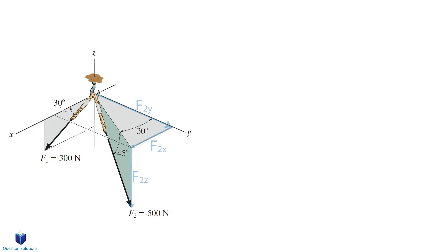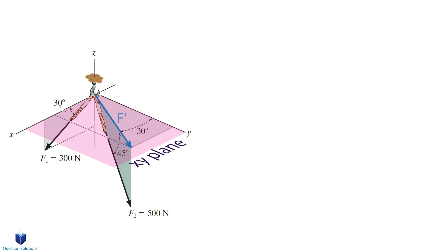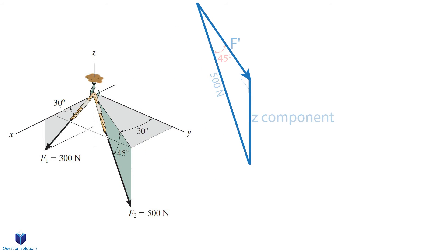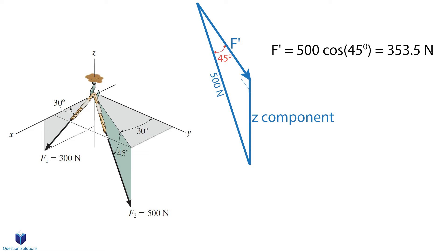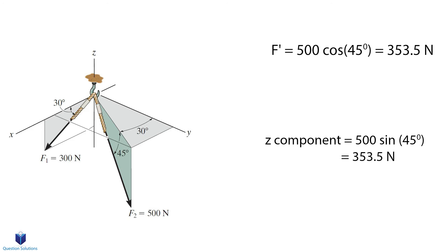Let's now look at force F2. Force F2 has all three components, which are labeled on the diagram. To find these components, we will have to find F', which is the force that lies on the xy plane. To find F', we can use basic trigonometry, as this is a right angle triangle. F' is equal to 500 newtons multiplied by cosine 45 degrees, which when solved is equal to 353.5 newtons. We can also find the z component, which is equal to 500 newtons multiplied by sine 45 degrees — again 353.5 newtons when solved.